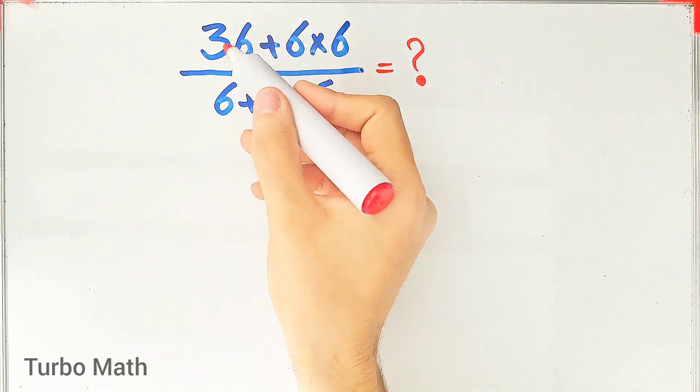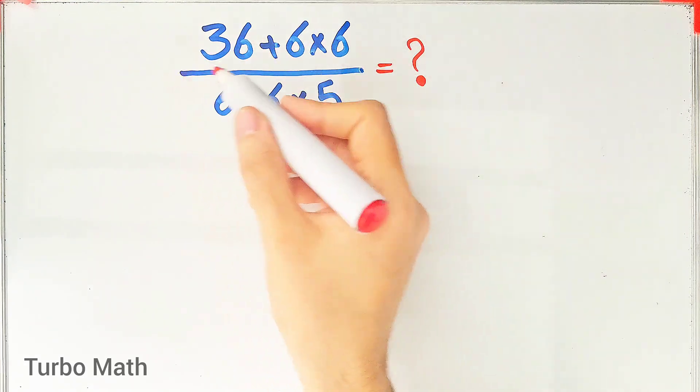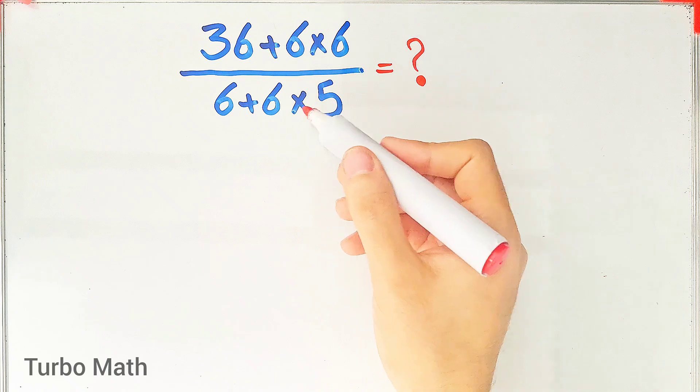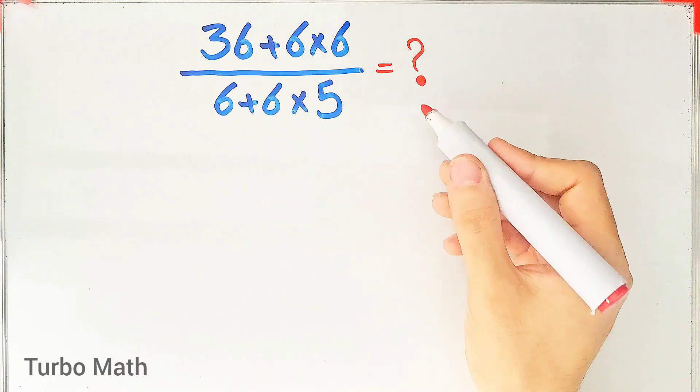36 plus 6 times 6 then over 6 plus 6 times 5. What is the answer of this question? Can you solve it?